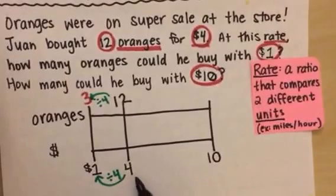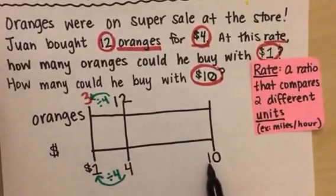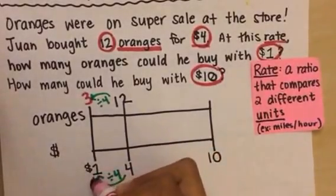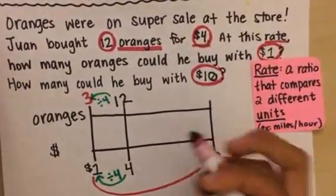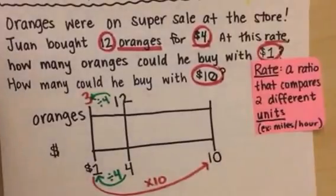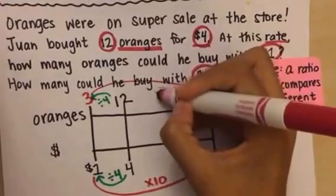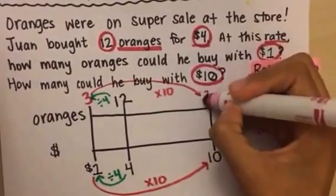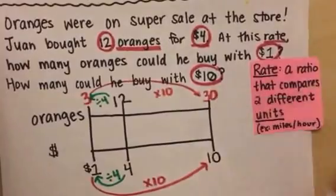Now let's think about a pattern with multiplication or division. Does four go into ten evenly? No, it doesn't, because those numbers are not compatible. But one goes into ten evenly, so I can use this rate that I already found. How many times does one go into ten? Ten times. Do the same thing to the top. Three times ten is going to give me—three times ten is thirty.